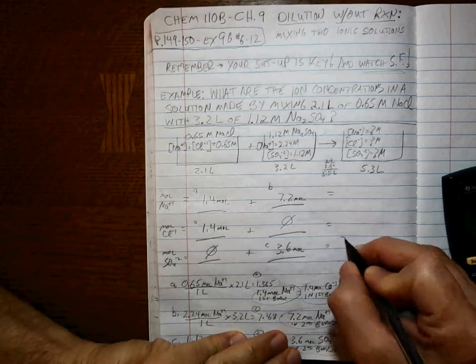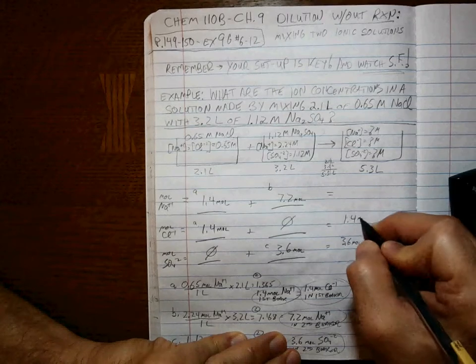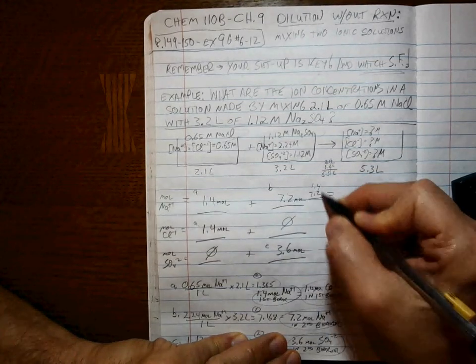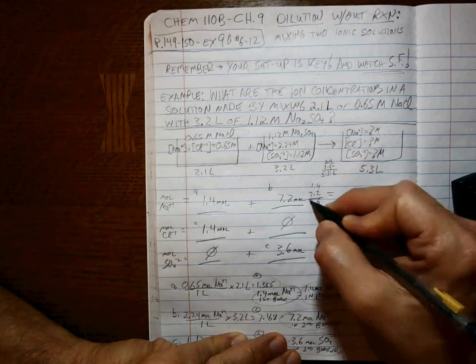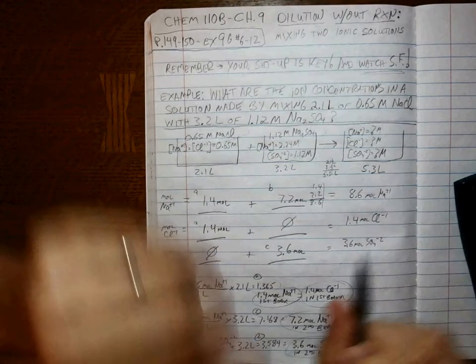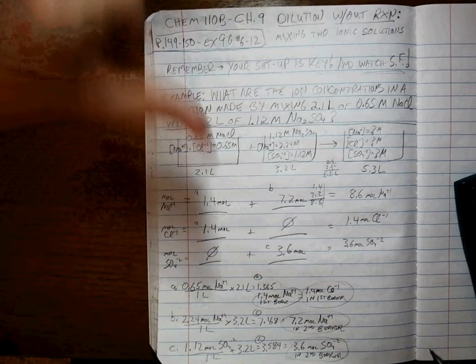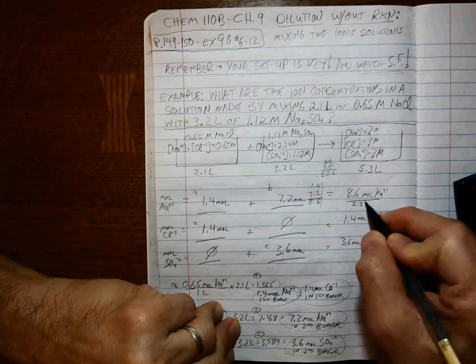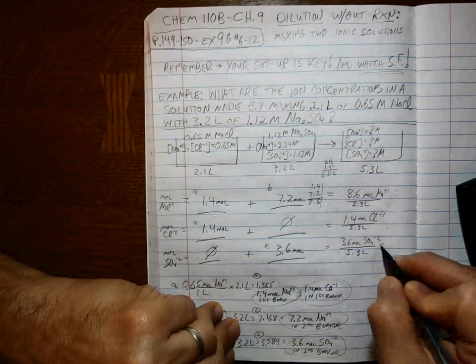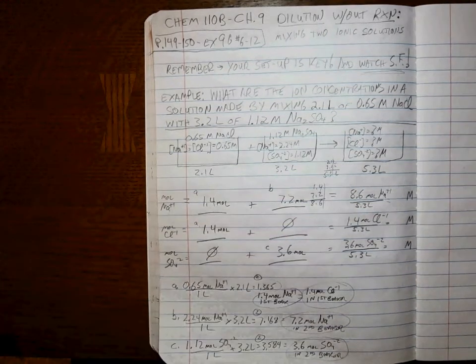Man, whenever you're organized and you know where everything belongs, life gets pretty easy. Zero plus 3.6 is 3.6 moles of sulfate ion at the end. 1.4 plus zero is 1.4 moles of chloride ion at the end. And now we have to add these two. Don't forget sig figs. 8.6 moles of the sodium ion. Because we had sodium ions from this beaker and sodium ions from this beaker, so they add together. That's the moles. We divide by the total volume at the end to get the concentration at the end. So this is molarity of sodium ion, molarity of chloride, and molarity of sulfate. Let's calculate that out.